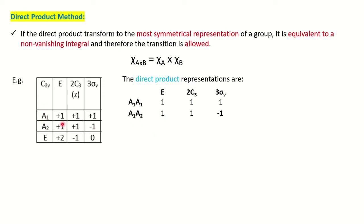If they ask you to find the direct product A1 × A2, multiply the characters of both: 1×1=1, 1×1=1, and 1×(−1)=−1, giving you 1, 1, −1. This is not the most symmetrical representation. If they ask for the irreducible representation of this direct product, you match it in the character table — for A2 you have characters 1, 1, −1 — so the direct product A1 × A2 belongs to A2.